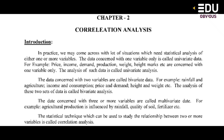For example: price, income, value, demand, production, weight, height. The univariate data is data that is concerned with one variable only. This is called univariate data. For example: price, income, demand, production, weight, height, marks, etc.